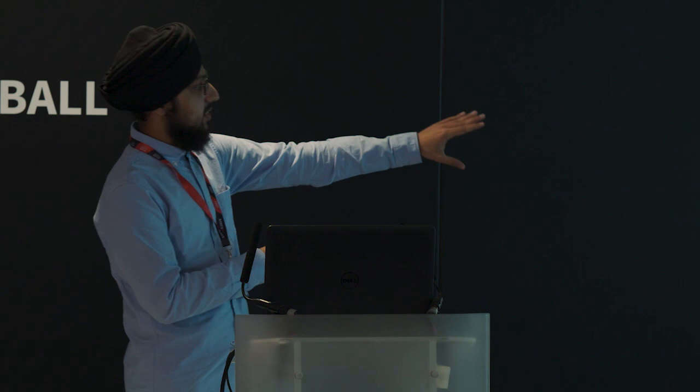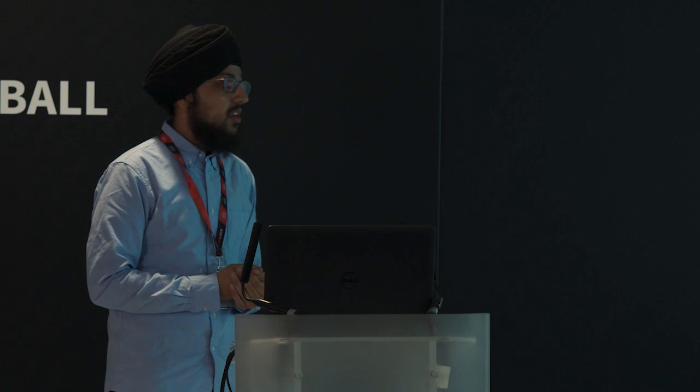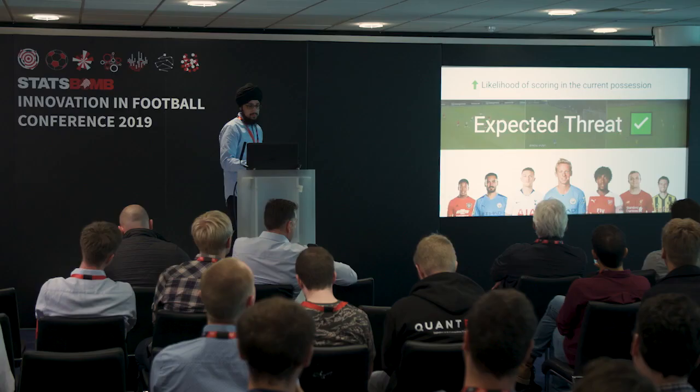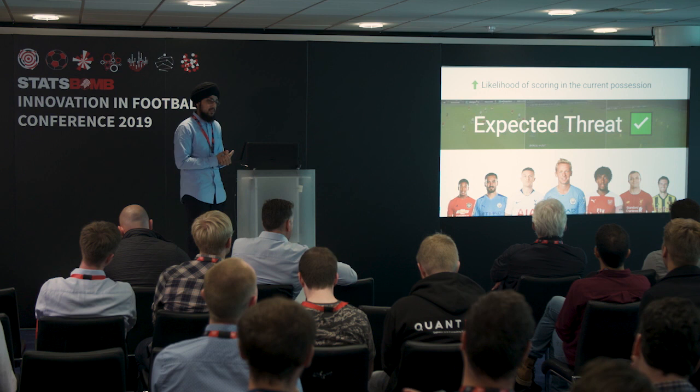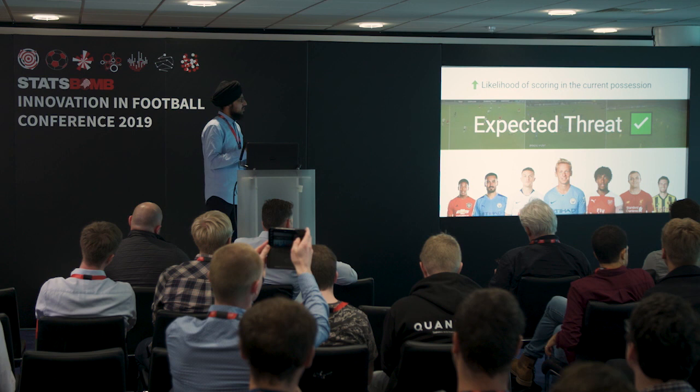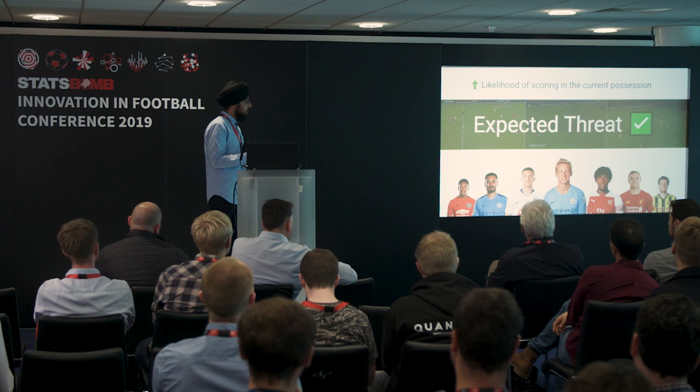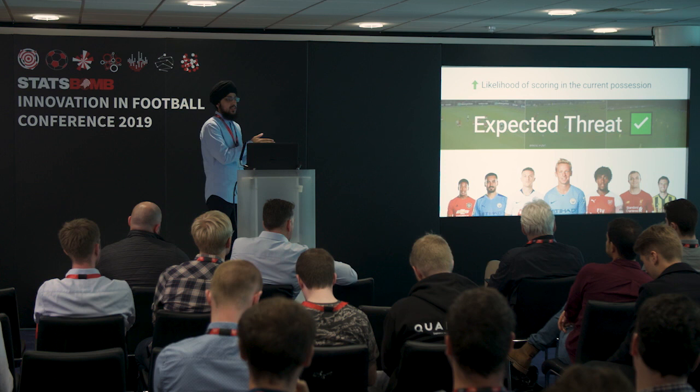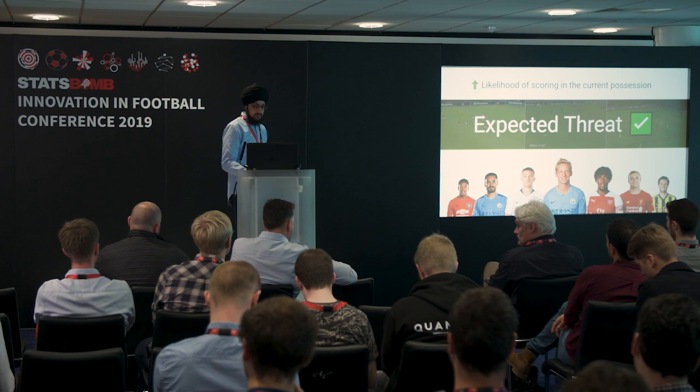What ties these three actions together is the fact that all of them increase the likelihood of their team scoring in that particular possession. When Trippier carries the ball from the halfway line all the way into the box, what he's doing intrinsically is increasing the likelihood of Spurs scoring. That exactly is what Expected Threat is trying to capture — it's trying to answer the question: for a given action, how much did the likelihood of scoring in that current possession change, whether positively or negatively? Then we can figure out for each action how much the XT changed, and start to value these player actions.